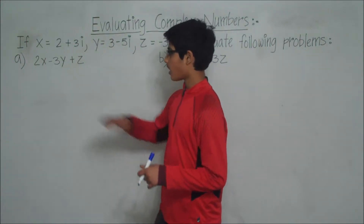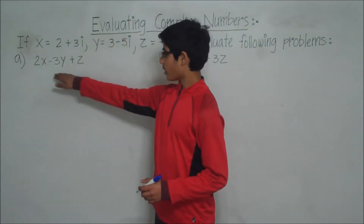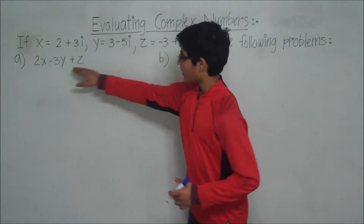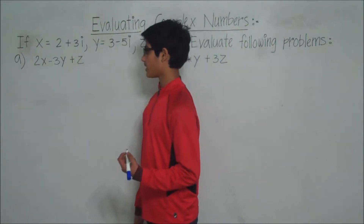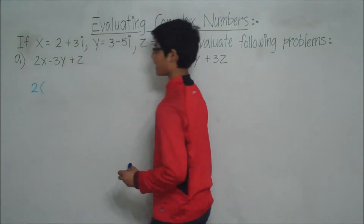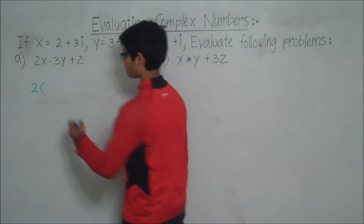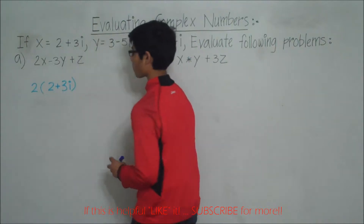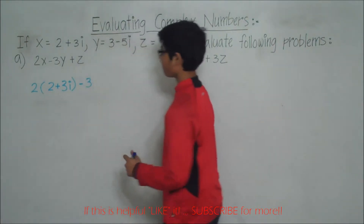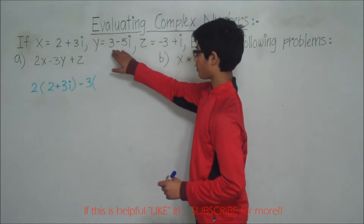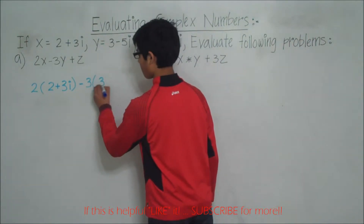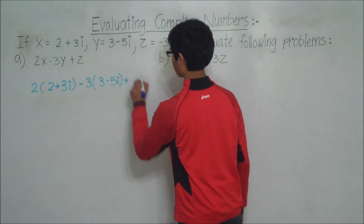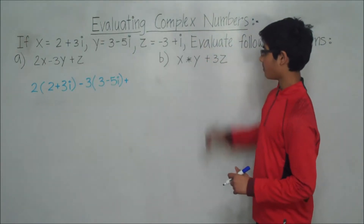Let's start out with question A. Let's rewrite question A, but instead of using x, y, and z, let's substitute the values in their respective places. So we have 2 times x, which is 2 plus 3i, minus 3y, and we know that y was equal to 3 minus 5i, and then we have plus z, which was negative 3 plus i.